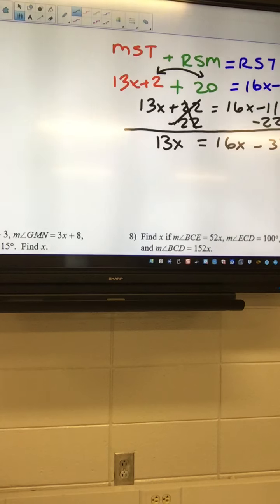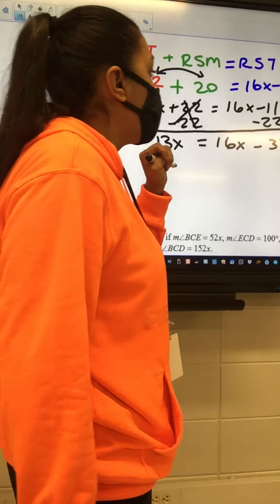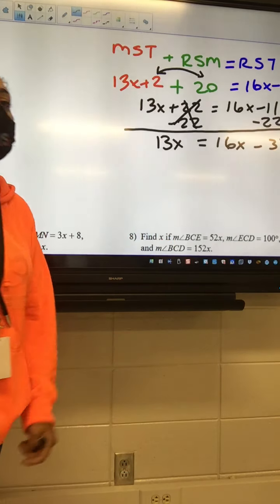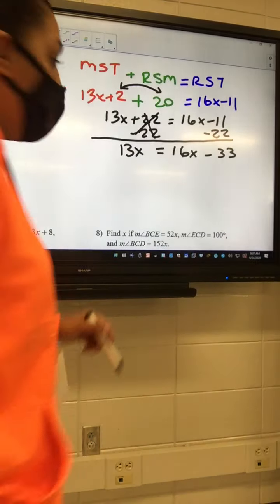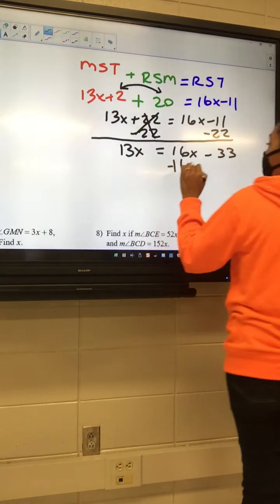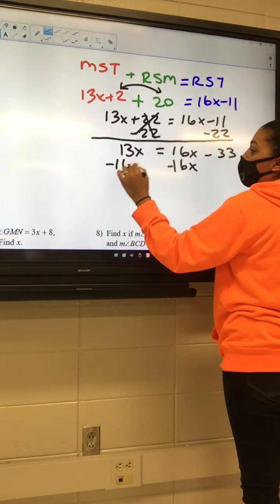So I got 13X equals 16X minus 11 minus 22 is going to be 33. And then now it says, what letters need to go to the left? X. So I got a 13X equals 16X minus 33. So I need to move that 16X. We have to minus 16 on both sides, right? Perfect.